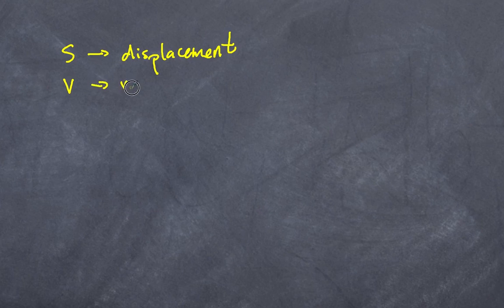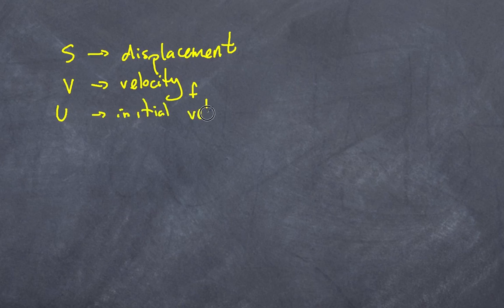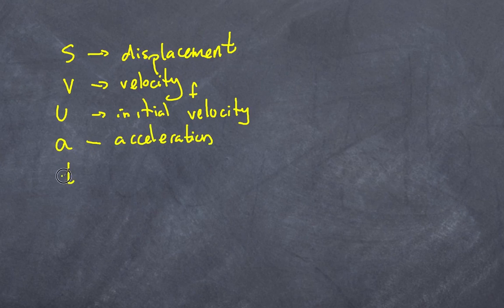V will be our velocity, but I will use two types of velocity. V will be our final velocity, and U will be my initial velocity. Some books will use V₀, but for this video I'm going to use U. We also have A for acceleration, which is pretty obvious, and T for time. So those are the five variables that I will use.